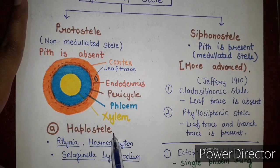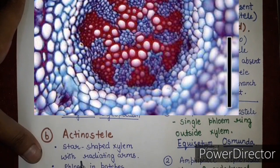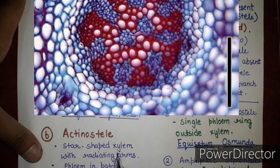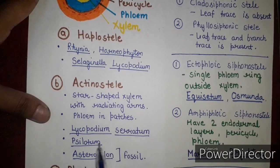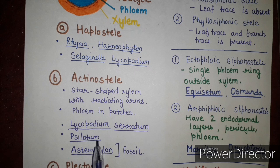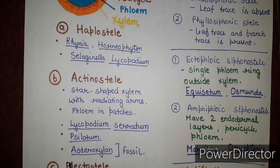The next type of protostele is the actinostele. In actinostele, xylem is present in the center in the form of a star-shaped structure, and phloem is present in patches around it. Examples of actinostele include Lycopodium serratum, Psilotum, and Asteroxylon, which is a fossil pteridophyte. Remember these examples as they fetch good marks in long answer type questions.